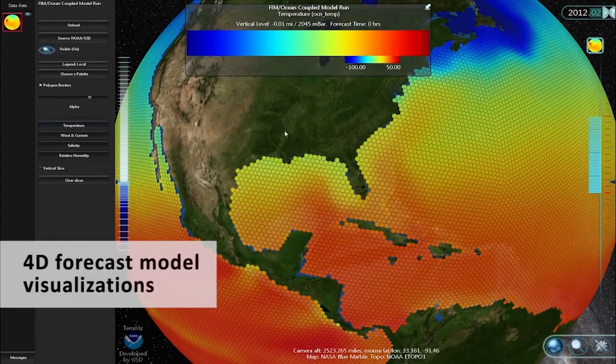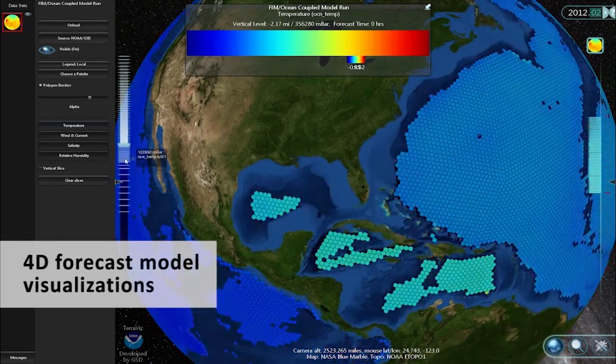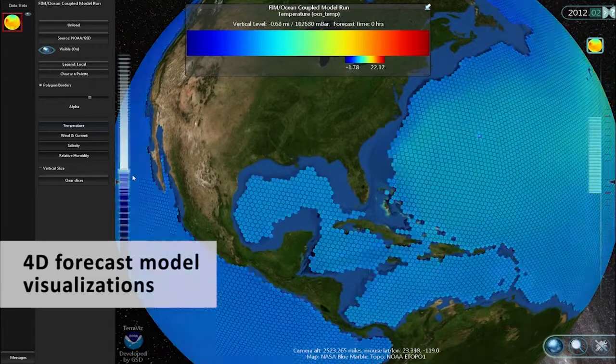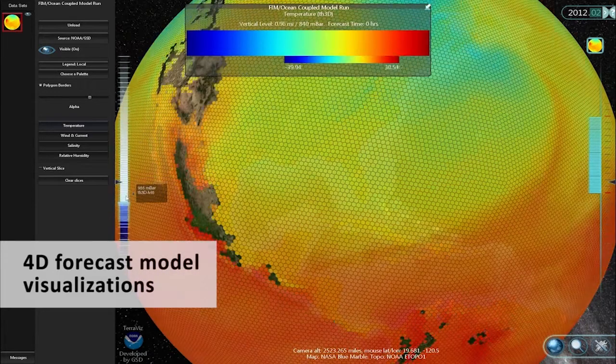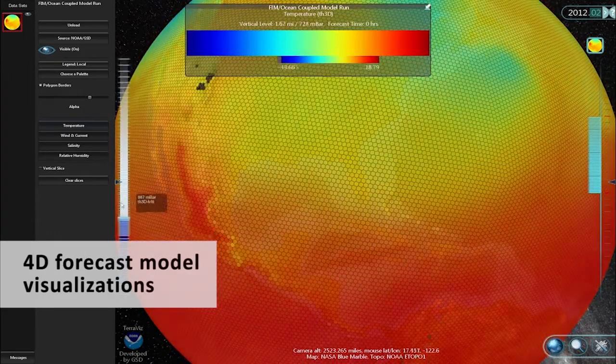NOAA's Fragile Earth Studios uses TerraViz to render a high-resolution weather simulation model. Starting with a detailed rendering of the Earth, the predicted air and water temperature is overlaid and then filtered through various vertical ranges.